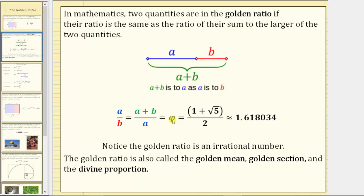The golden ratio is exactly equal to the quantity one plus the square root of five divided by two, which is approximately 1.618. Notice the golden ratio is an irrational number.